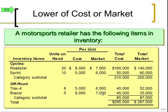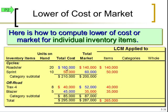Looking at a motorsports retailer example, they have a group of cycles — two different types — and a group of off-road vehicles — two different types. We're given units on hand, cost per unit, and market price per unit for each, along with total cost and total market per line item, per category, and a grand total. We'll apply LCM to each type of unit — all the roadsters at once, all the sprints — then to each whole category, and then to the overall inventory total.